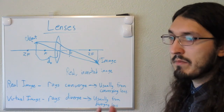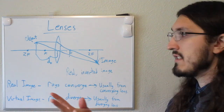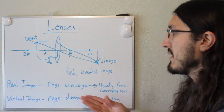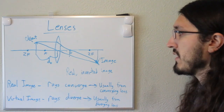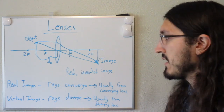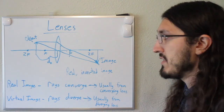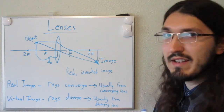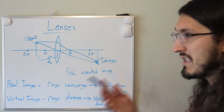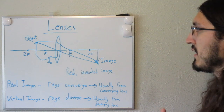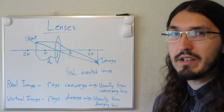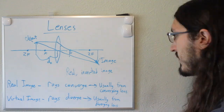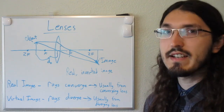Okay so I covered a lot in this video. I compared converging and diverging lenses — converging lenses usually make real images which occur whenever rays converge, whereas diverging lenses usually create virtual images. Magnification is the term we use to describe how big or small the image is. That's all for today's video. Thank you, see you next time.